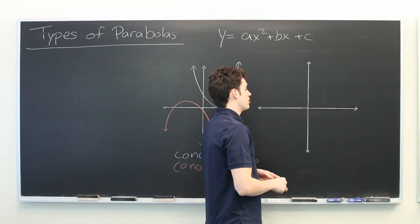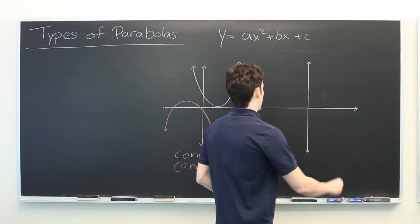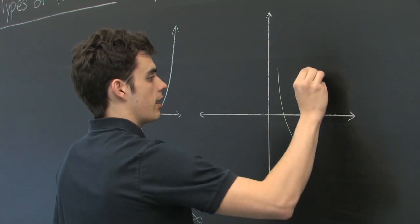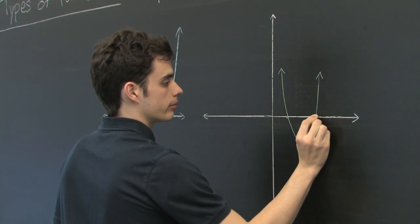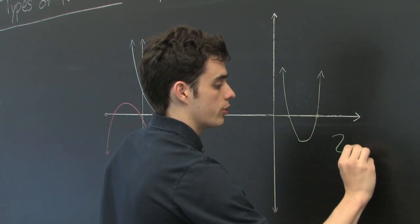Another way to classify parabolas is by the number of times that they intersect the x-axis. The most common is a parabola that intersects twice. We're going to have two roots.